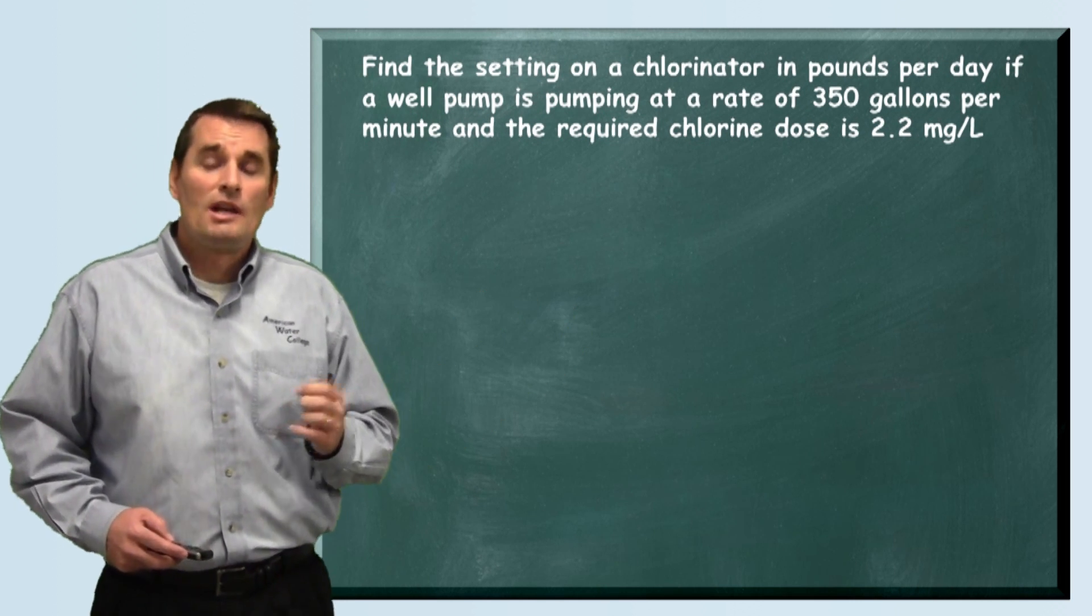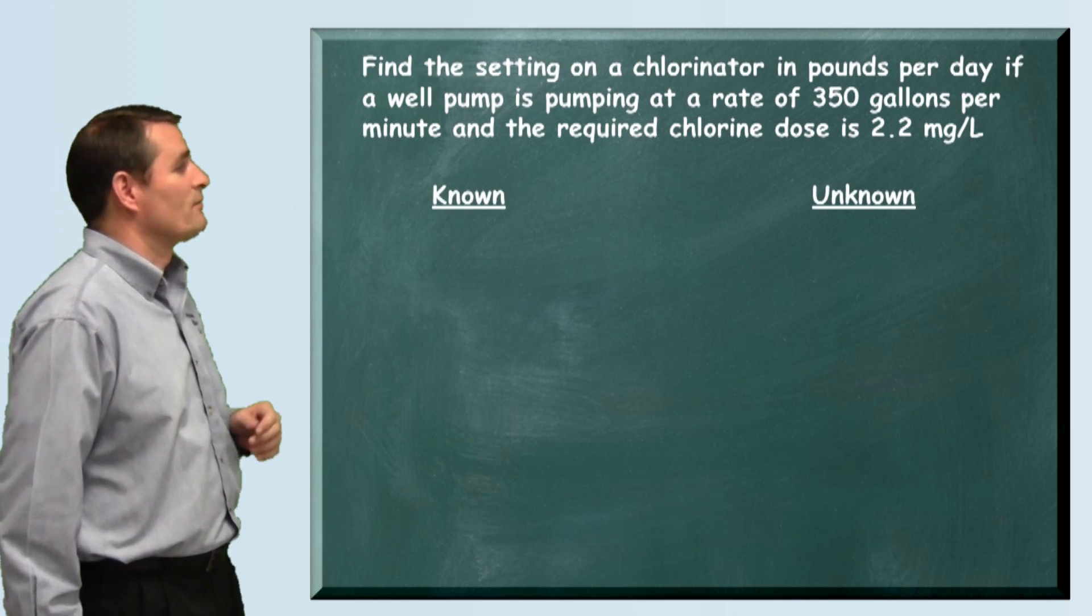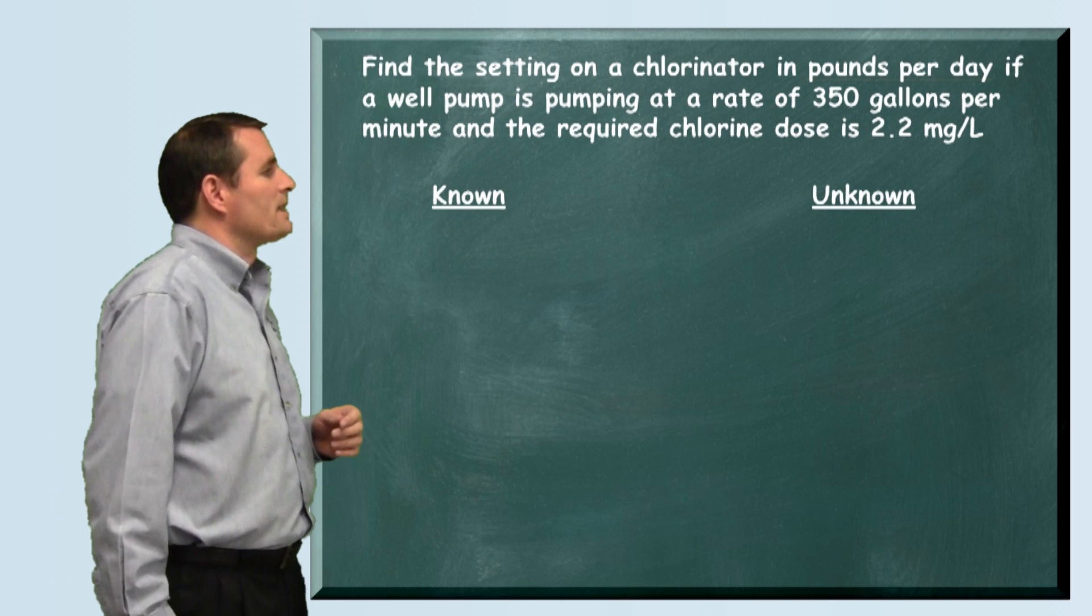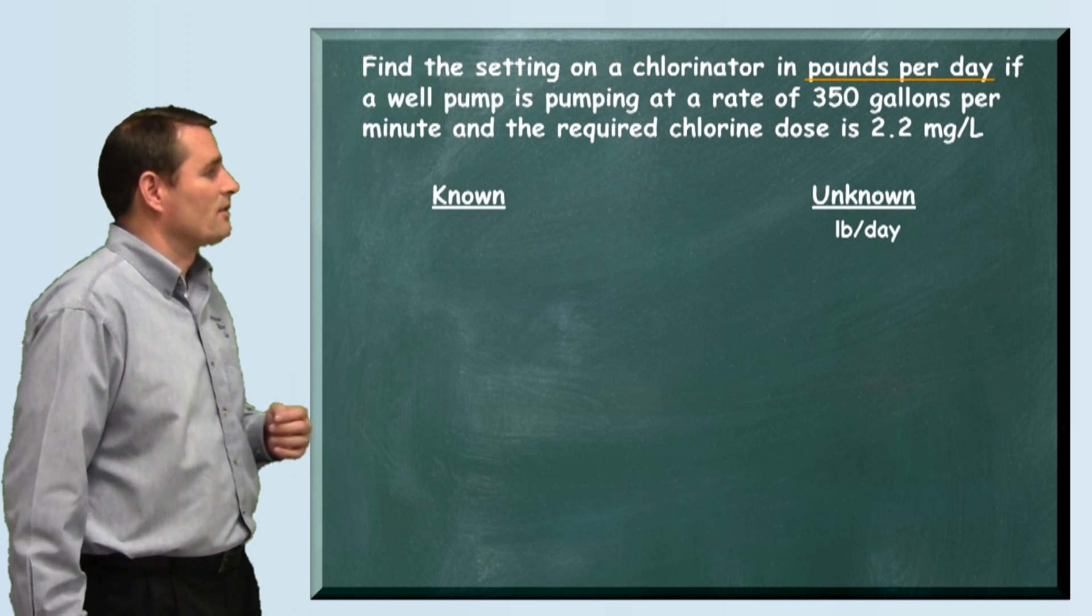Like we like to do, let's pull the numbers out of the problem. So let's write down our known and our unknown information. The problem tells us that we're looking for pounds per day so we write that down as our unknown.